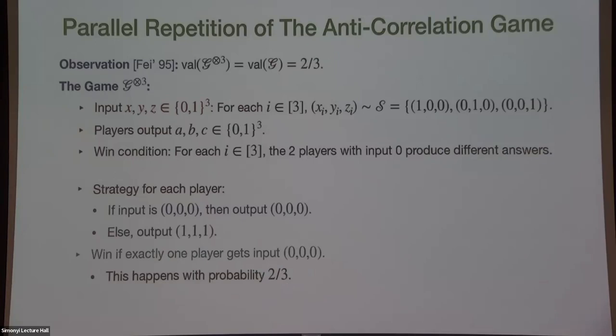Question: what if you repeat it twice instead of three? Since you can win three copies with probability 2/3, you can also win two copies with probability 2/3, because when playing three copies you're playing two copies inside it, and you can use a randomized strategy based on sampling the third copy, since you know mu.